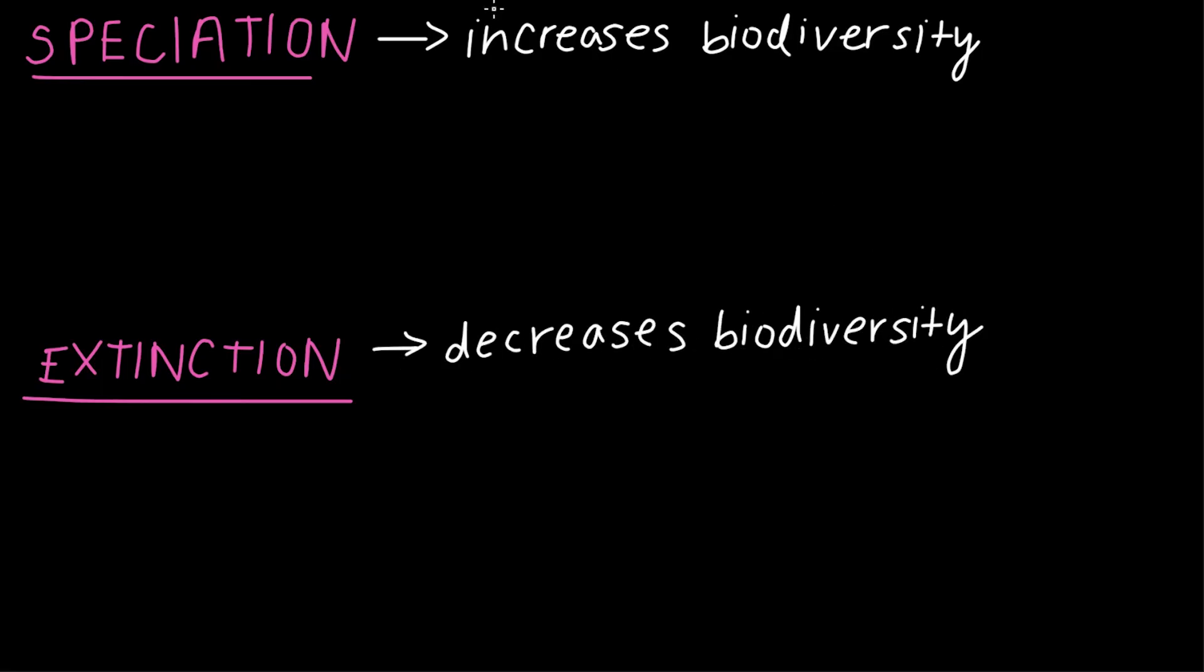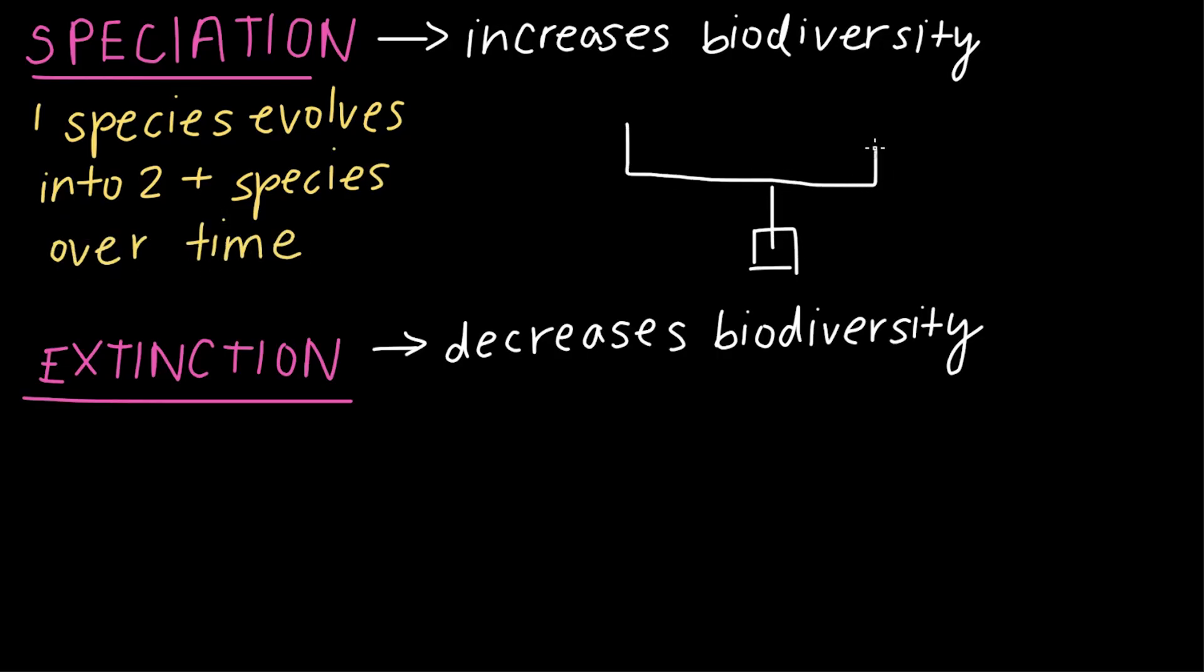So let's talk about speciation first. So speciation happens when one species evolves into two or more species over time. And you might have heard or seen something that looks like this. And I'll draw it out right here to the right. And this is just a very simple speciation model or a phylogenetic tree. So we have here a common ancestor that branches off into different species over time. This arrow representing time, or T for short.